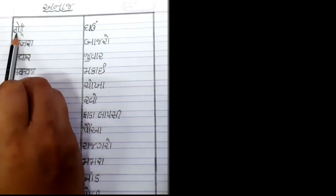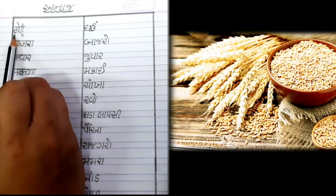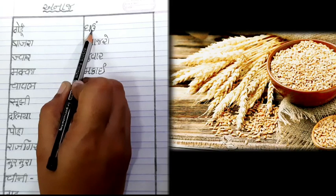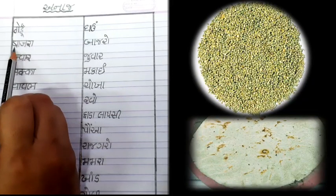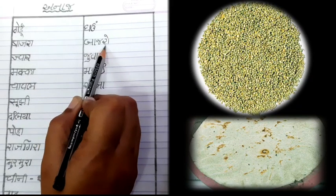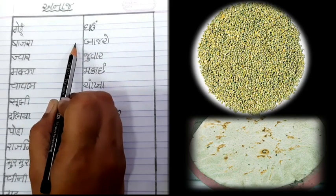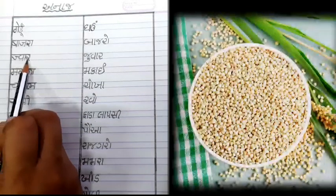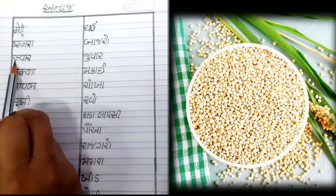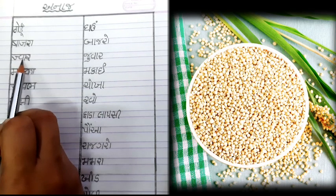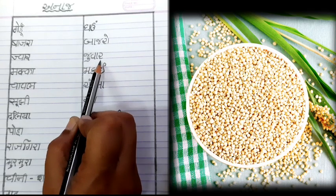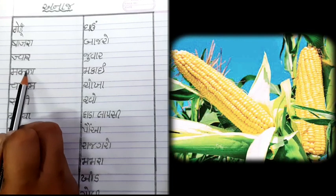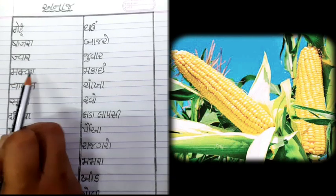પહેલું છે 'બાજરા' - બાજરો. તમે બાજરાનો રોટલો તો ખાતા જ હશો. ત્યાર પછી 'મકા' - મકાઈ. 'મકા'નું ગુજરાતી થાય છે 'મકાઈ', એટલે કે ડોડો.